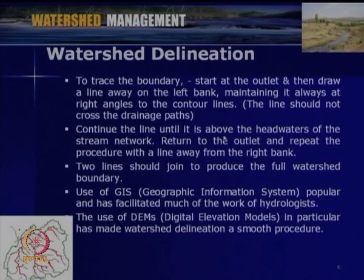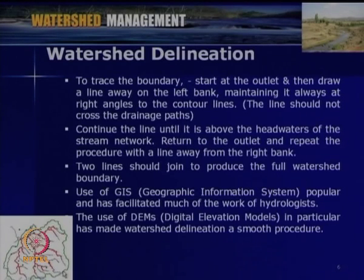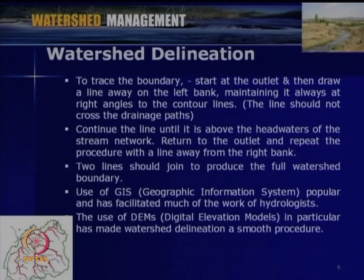We continue the line until it is above the headwaters of the stream network, going along the ridges, and then return to the outlet, repeating the procedure with a line away from the right bank. Starting from one location and going back, we return to complete the boundary. For example, if this is the outlet, we start like this, and using the contour lines from the toposheet, we go around and finally come back — that delineates the watershed.